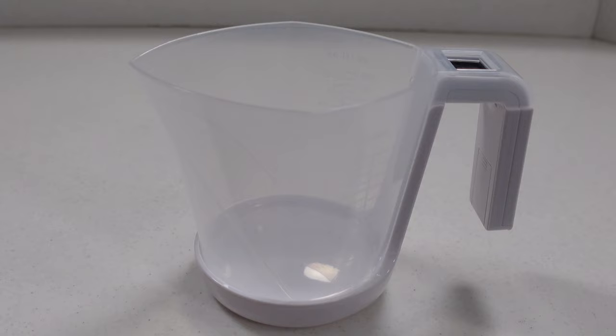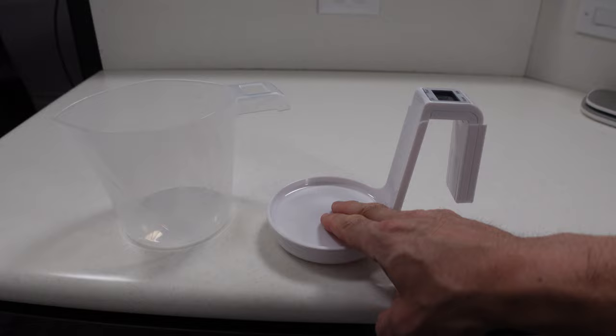Well, here's the measuring cup scale. It actually comes in two pieces: you've got the measuring cup that sits right on top here, and you have the scale right here. Looks a little like either a high heels shoe or a musical note, one or the other.